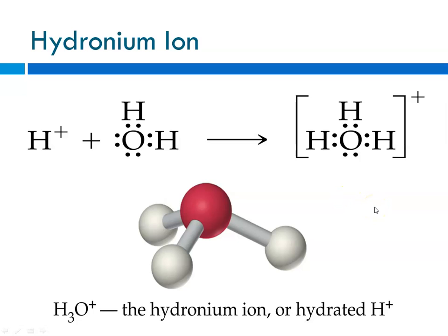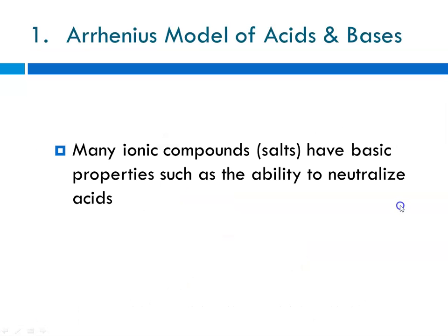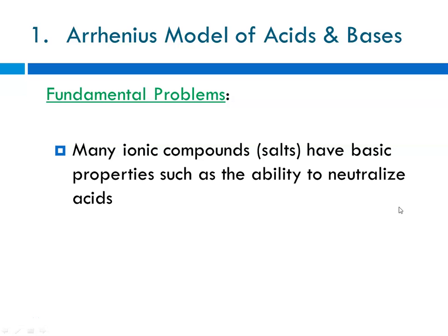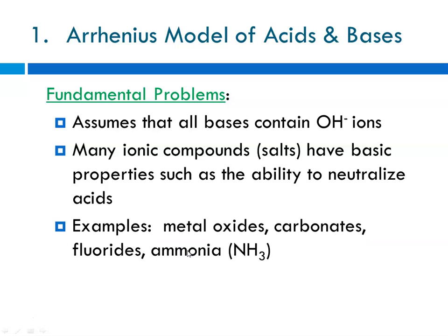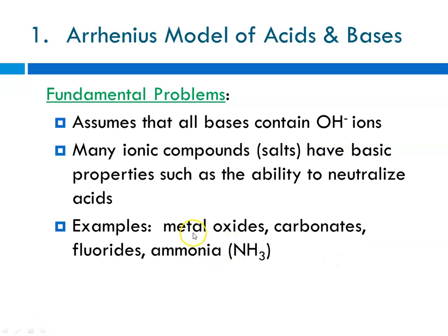The hydronium ion is the result of an H+ being produced by an acid combining with water and forming this positive ion, H3O+. And, again, we can also refer to it as hydrated H+ or protonated water, however you want to call it. Some other fundamental problems with the Arrhenius model of acids and bases: many ionic compounds, salts, have basic properties, and they have the ability to neutralize acids. The Arrhenius model assumed that all bases contain the hydroxide ion, and they don't. And some examples would be metal oxides and carbonates, fluorides, and ammonia.